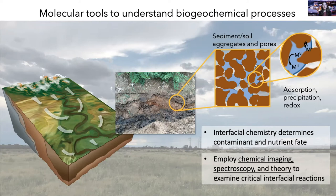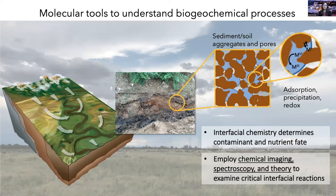At the interfaces between these pore spaces and these aggregated particles, you have a number of critical interfacial reactions — things like adsorption, precipitation, and redox — that control the chemical form of contaminants and nutrients. By controlling their chemical form or their chemical speciation, they determine the distribution within soils and sediments and thus determine how they move throughout the landscape. We can use chemical imaging, spectroscopy, and theoretical methods to examine these critical interfacial reactions and probe the chemical speciation of contaminants and nutrient-type elements within the environment.